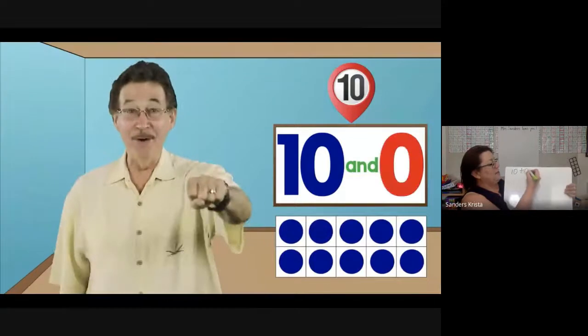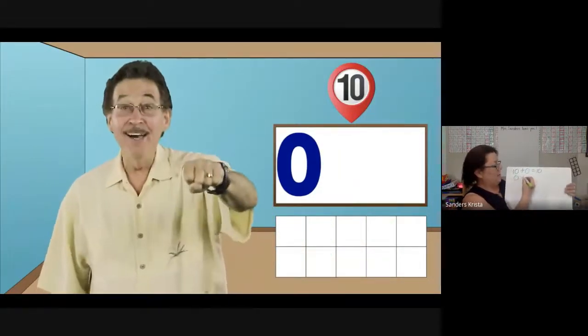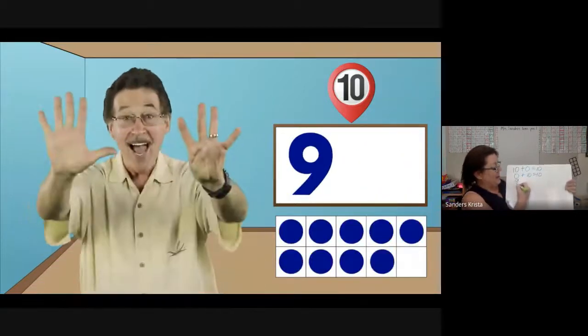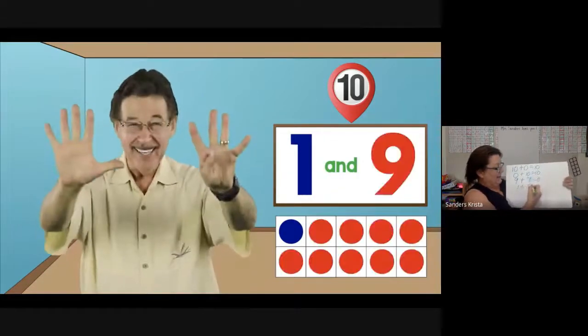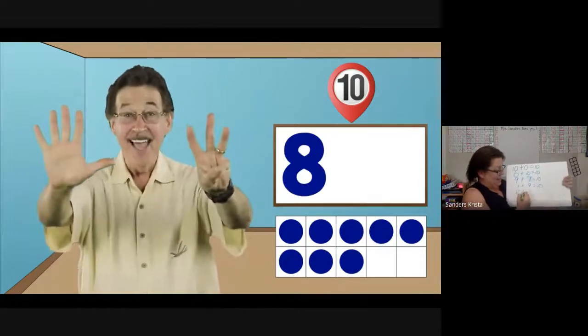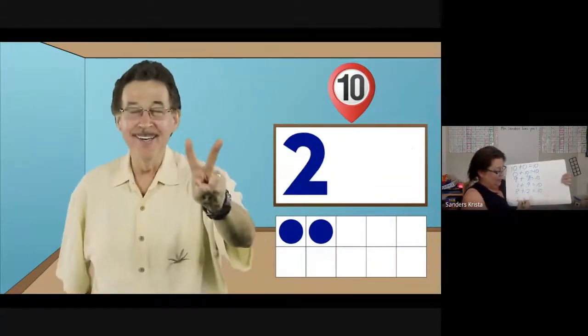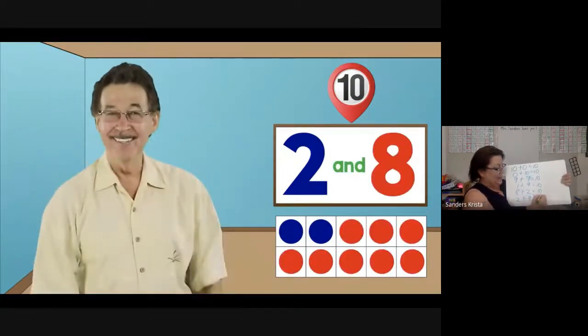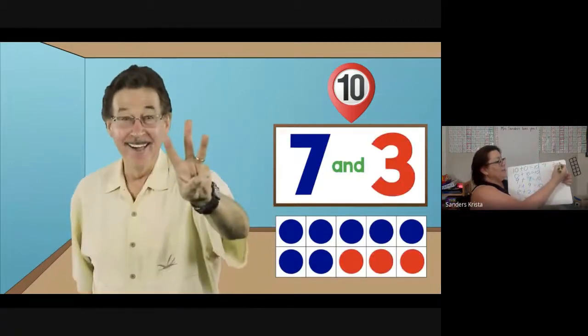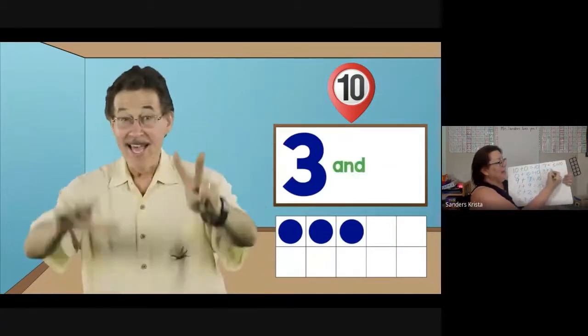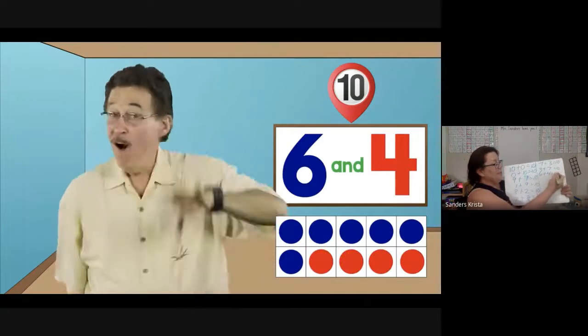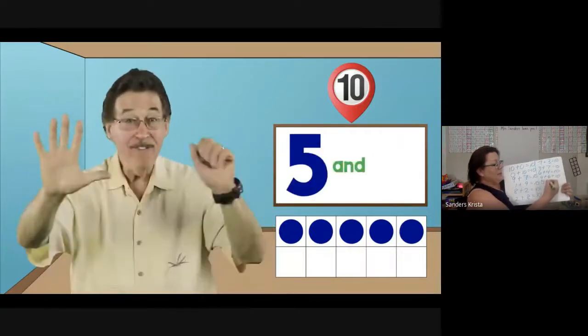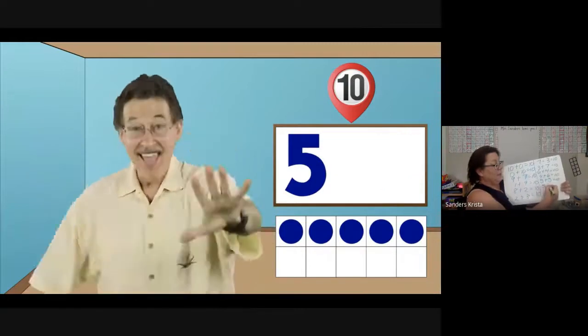10 and 0, 0 and 10, 9 and 1, 1 and 9, 8 and 2, 2 and 8, 7 and 3, 3 and 7, 6 and 4, 4 and 6, 5 and 5, 5 and 5. Those are the number pairs that make 10.